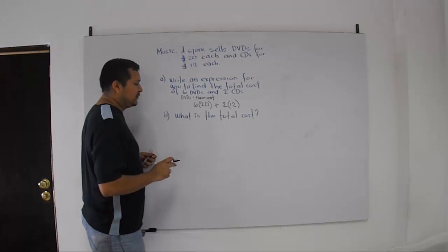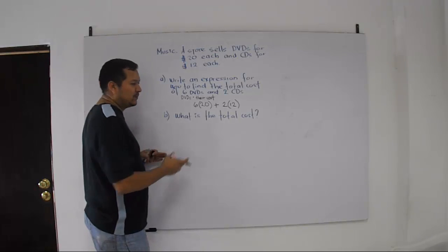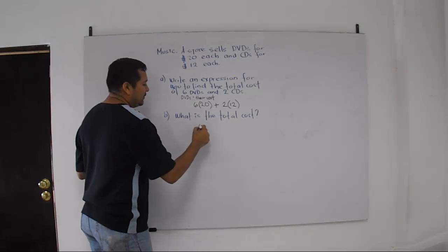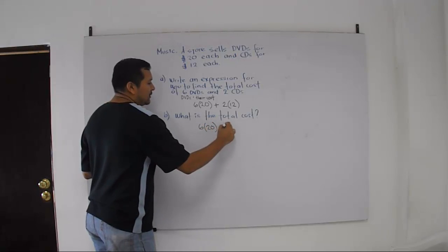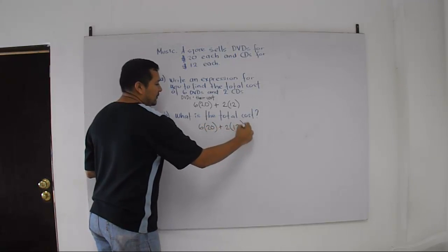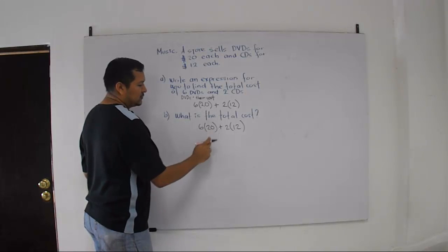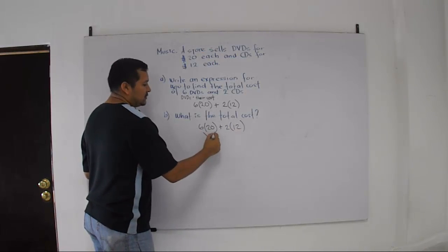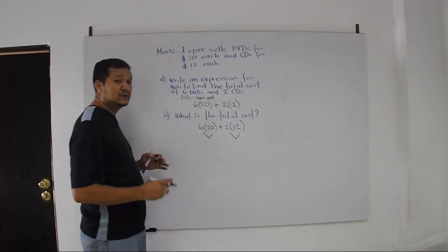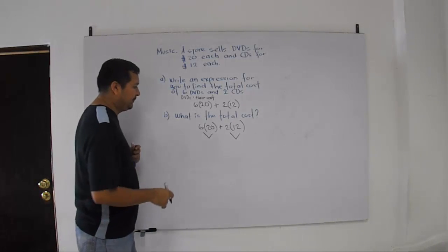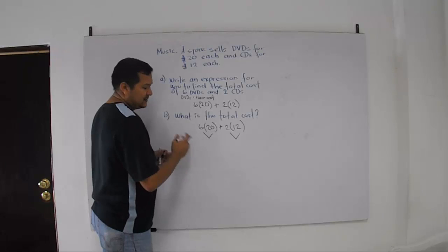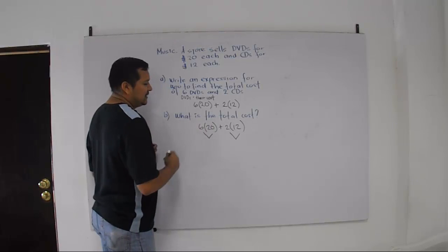In the next one, we have to find the total cost by using this expression. So we only have to apply the order of operations. Multiplications are going to be first. So this multiplication and this multiplication can be done at the same time. Plus is the addition, so it's the last operation.